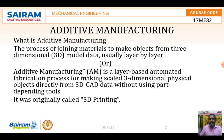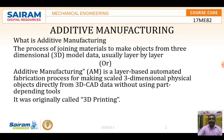So what is additive manufacturing? Additive manufacturing is the process of adding material layer by layer. It is a layer-based propagation process making scaled three-dimensional physical objects directly from 3D CAD data without depending on tools. Additive manufacturing was originally called 3D building — it means building a component layer by layer.